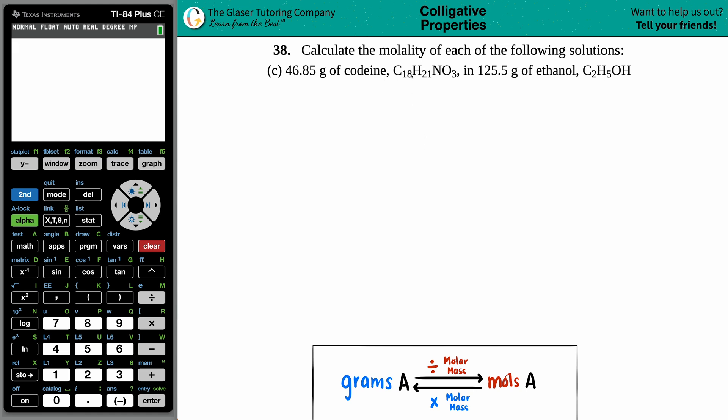Number 38, calculate the molality of each of the following solutions. So we have 46.85 grams of codeine, which is C18H21NO3, in 125.5 grams of ethanol, C2H5OH. Why is this even a combination? No one knows.